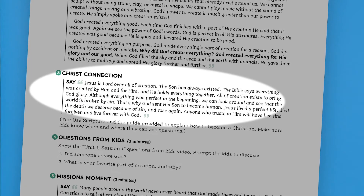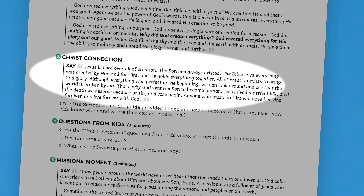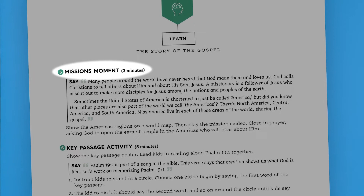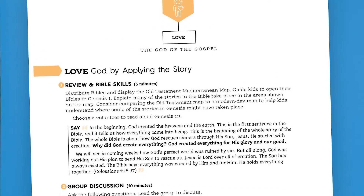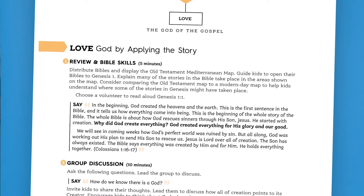Afterward, leaders can show kids how that session's story points to Jesus with the Christ connection — one of the most important features of a session. Finally, the missions moment helps kids see what God is doing all around the world. Love is the third part of the session content. During this time, leaders will review the Bible story while giving the kids the opportunity to work on their Bible skills. A group discussion follows, allowing kids to continue processing what they're learning as they're encouraged to grow in their love for God.